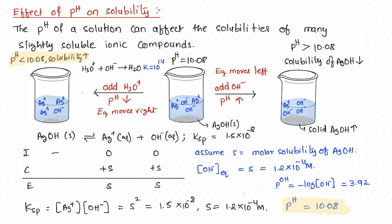To understand this concept more quantitatively, let us dissolve silver hydroxide in two different buffer solutions: one with a pH less than the pH of the saturated solution of silver hydroxide, and another buffer with a pH higher than the pH of the saturated solution of silver hydroxide. I pick buffer solutions with pH 4 and pH 11. In the next slide, we will see what happens to the solubility of silver hydroxide when it is dissolved in these two buffer solutions.